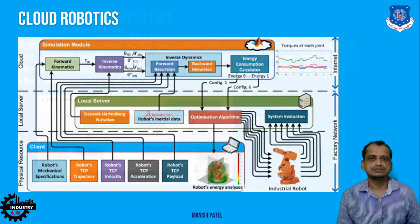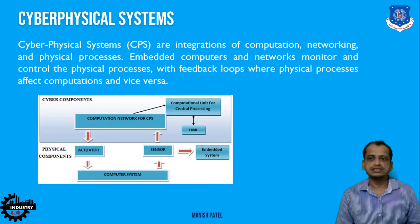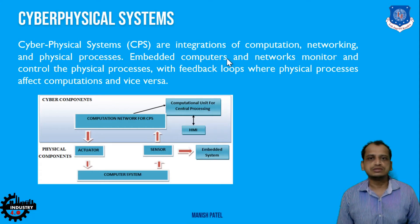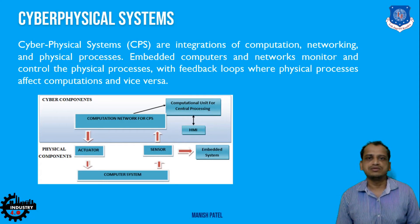The cyber physical system — another name associated with Industry 4.0 — involves the integration of physical processes, computation, and networking. These three areas integrate to form the cyber physical system. Actuators and sensors comprise the physical components, creating a loop from computational networks to control physical processes. Together, cyber components in the form of computational networks and physical components — actuators, sensors, and embedded systems — form the cyber physical system.